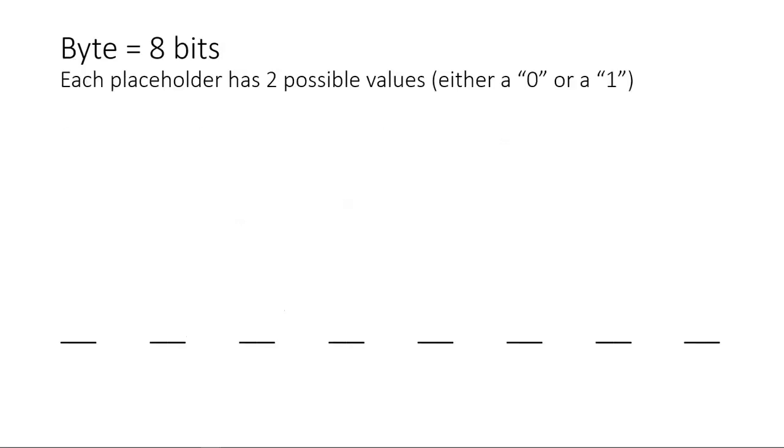So a byte consists of eight bits. So let's consider where these bits go, actually placeholders. A placeholder has two possible values, either a zero or a one.